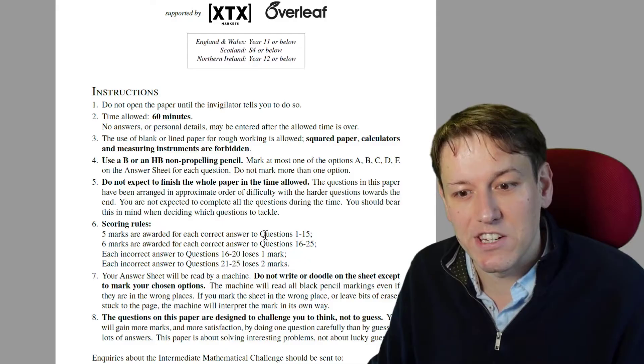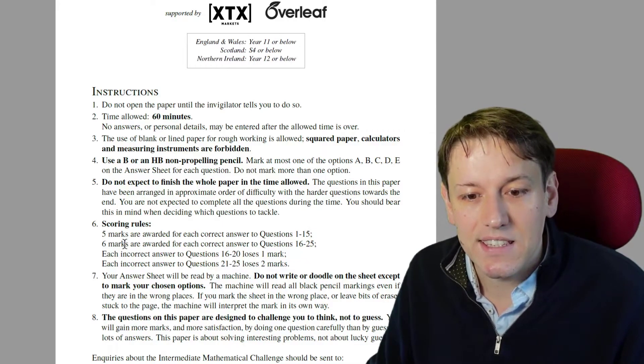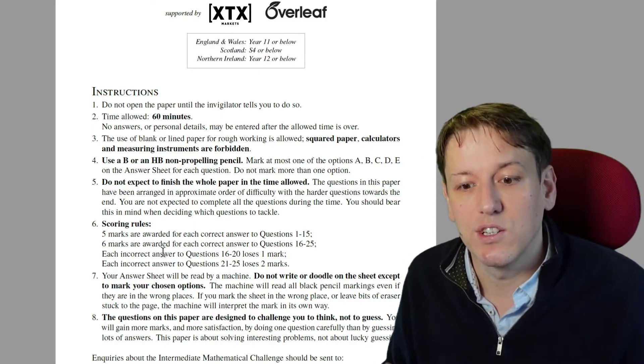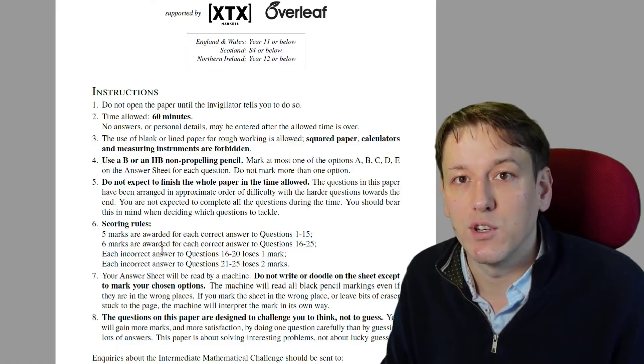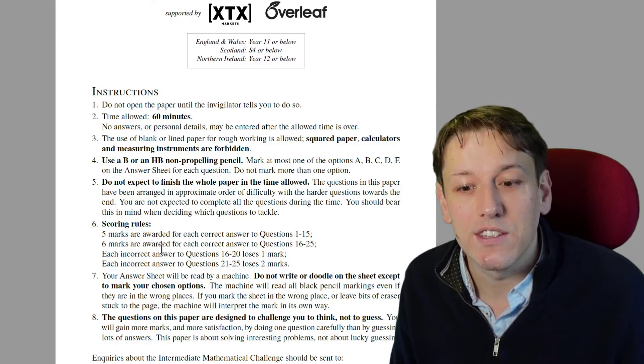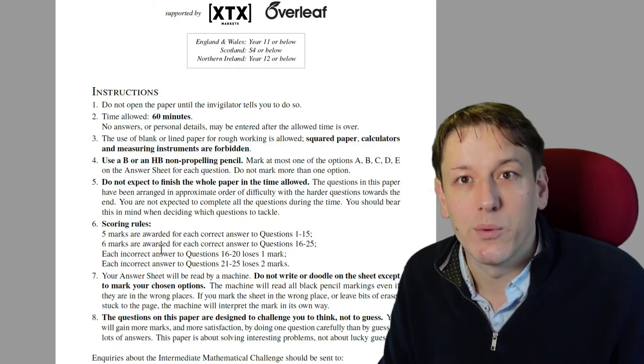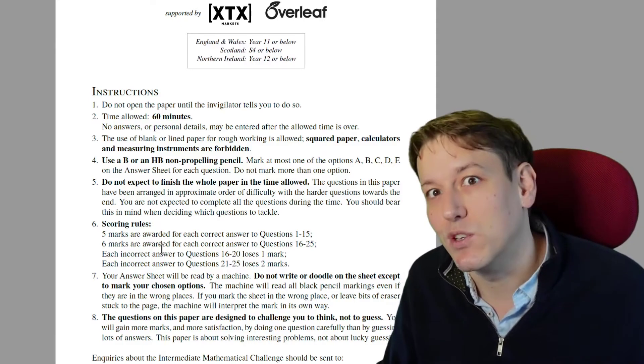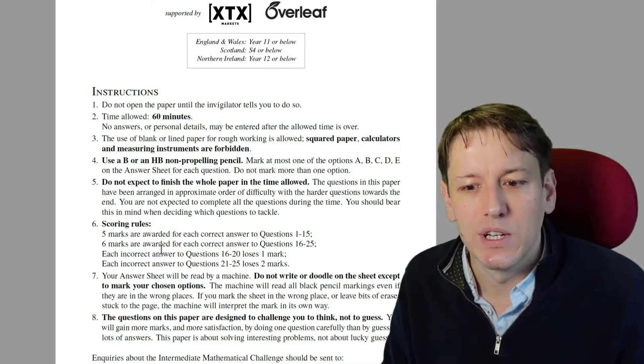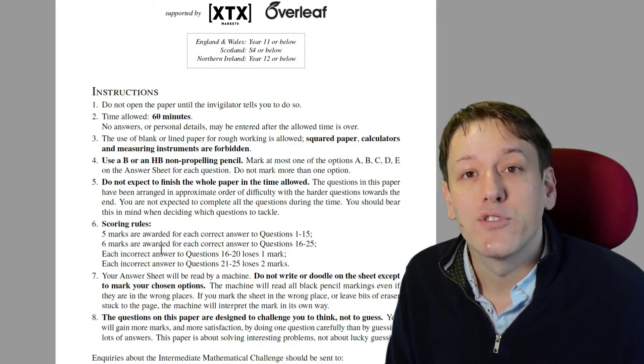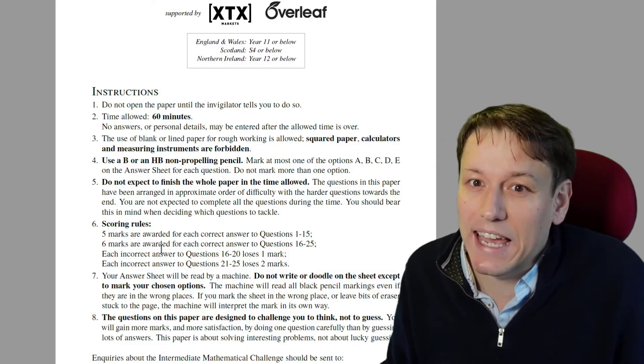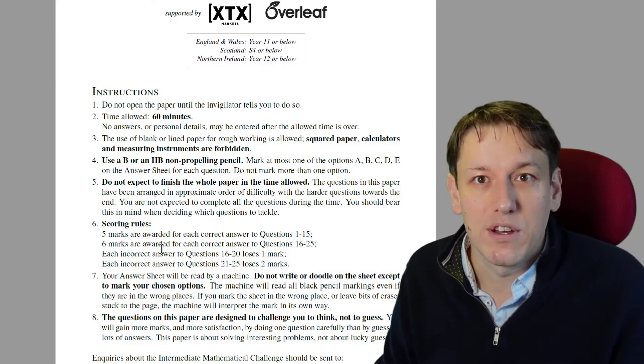Five marks are awarded for each correct answer to questions 1 to 15, and six are awarded for 16 to 25. But if you get something wrong in 16 to 20 you lose a mark, and if you get something wrong in 21 to 25 you lose two marks. If you leave the question blank you don't lose any marks. For 16 to 25 you'll score zero without losing marks if you leave them blank; it's only if you guess and get it wrong that you lose marks. For questions 1 to 15 there's no penalty at all for guessing and getting it wrong. So for questions 1 to 15, although you should work out the answer if you can, if you don't have an answer you definitely should guess—you might get some free marks just by chance.